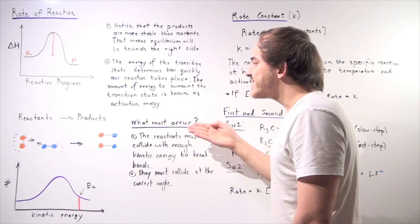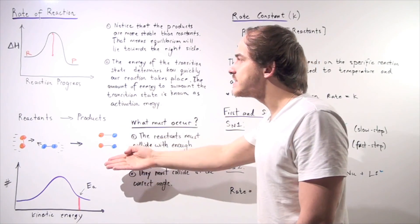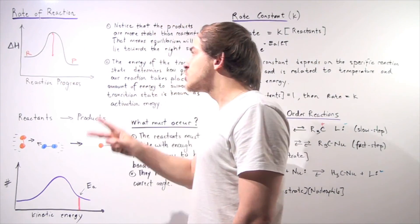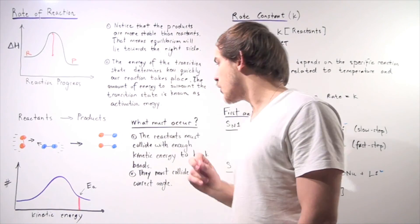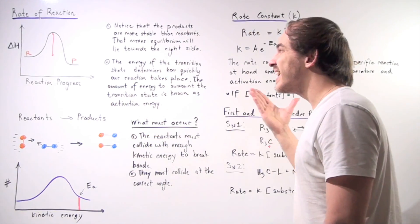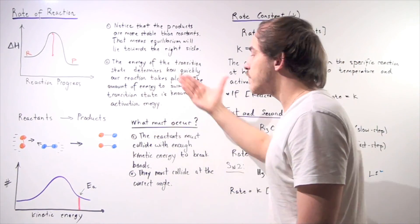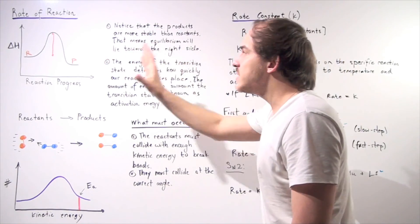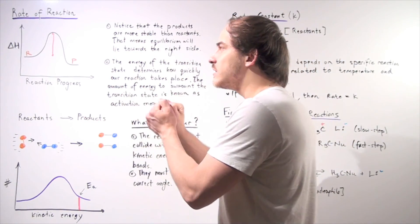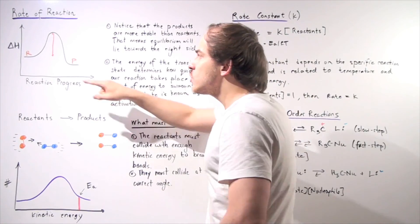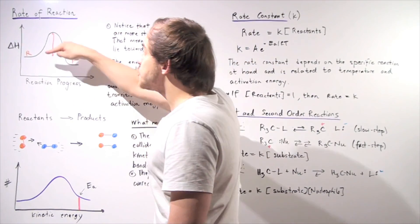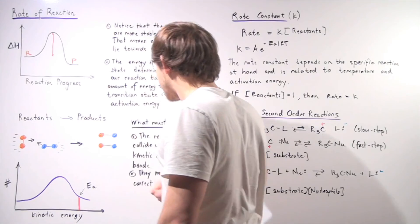So what must take place for our reaction to actually occur? Two important things must occur. First, the reactants must collide, and they must have enough kinetic energy during that collision to climb this activation barrier, to reach this transition state.